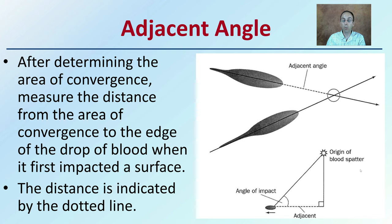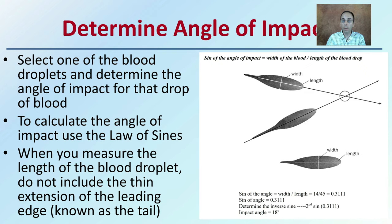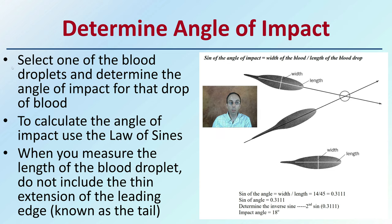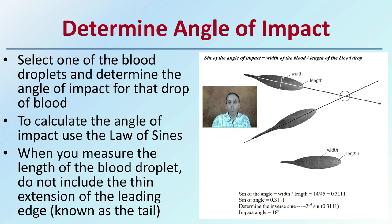To determine the angle of impact, select one of the blood drops and determine the angle of impact for that drop. You need the width and the length to calculate it — take the width, divide it by the length, and you get the sine of the angle of impact. Use the law of sines to calculate the angle. When measuring the length of the blood droplet, do not include the thin extension of the leading edge known as the tail. The length ends right here; it does not extend all the way to the tail. The width goes from this edge to this edge. This impact angle was determined to be 18 degrees.